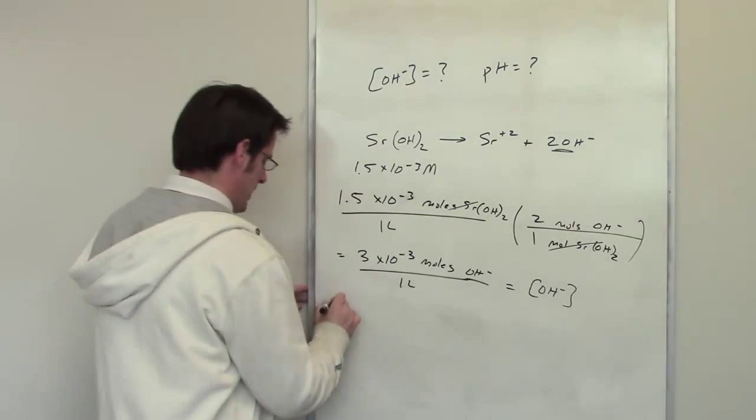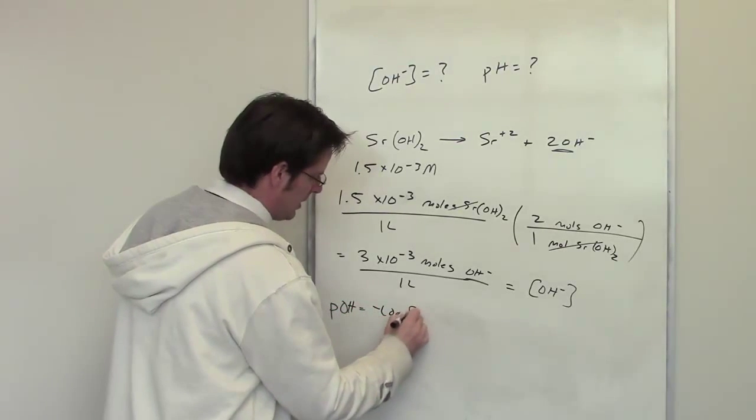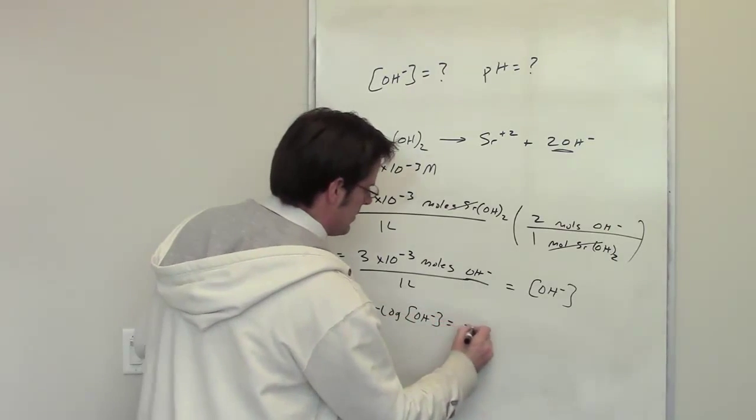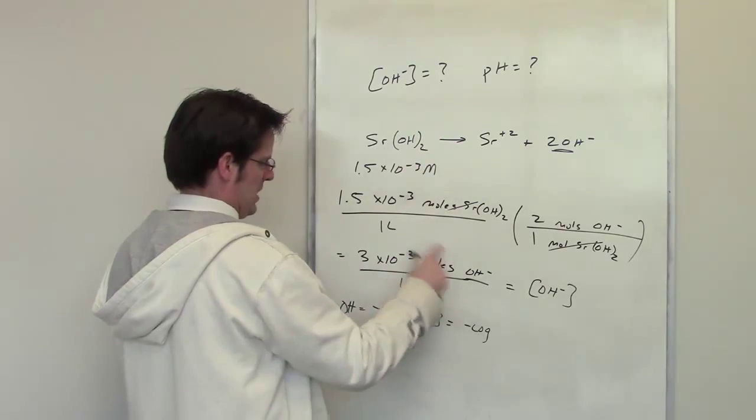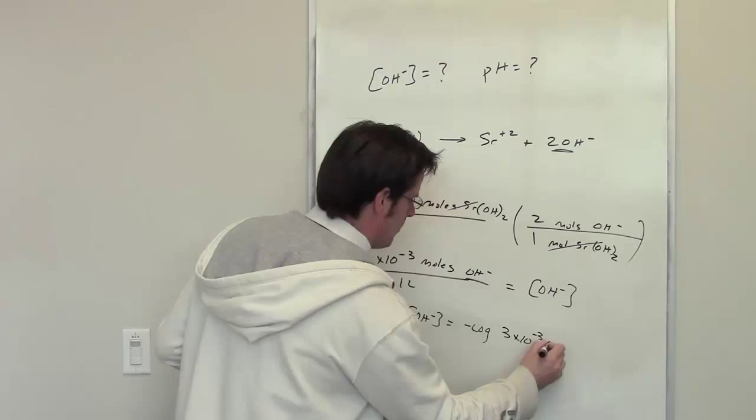Well I told you in an earlier video that pOH is equal to the negative log of the concentration of hydroxide. That means that pOH is equal to the negative log of this number, which is 3 × 10^-3 molar.